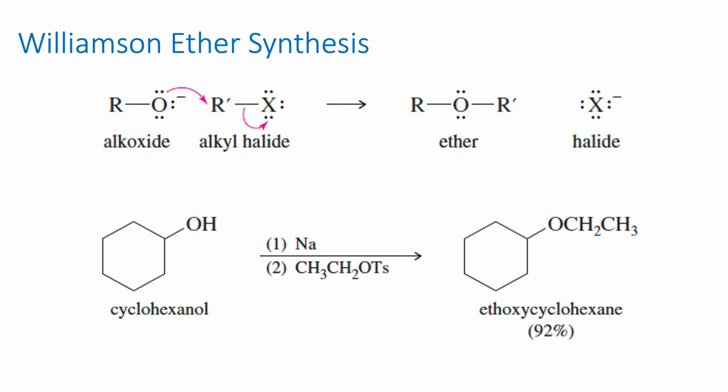The reaction below shows that we can start with cyclohexanol. In the first step, sodium metal deprotonates the alcohol and turns it into a strong nucleophile. In the second step, we add the appropriate electrophile — in this case an ethyl tosylate — and we treat the OTs as if it's a halogen since it's a weak base and a really good leaving group. The alkoxide attacks the electrophilic carbon on the tosylate and forms an ether — in this case ethoxycyclohexane.